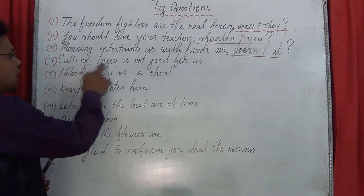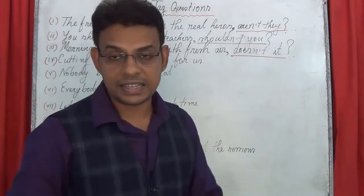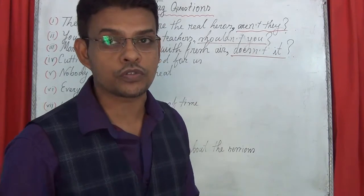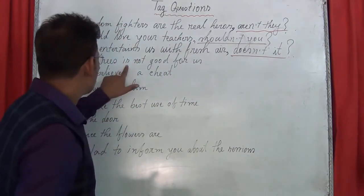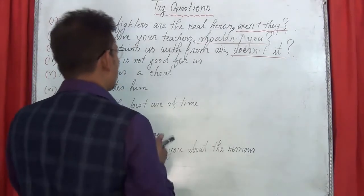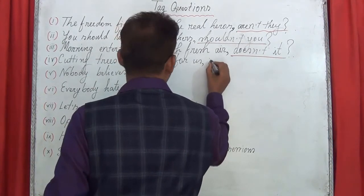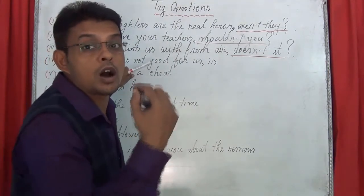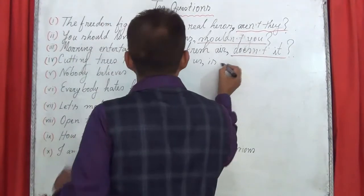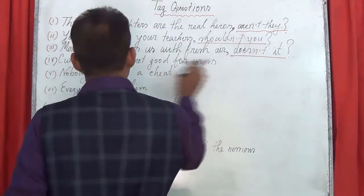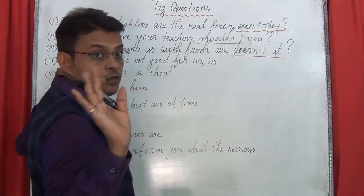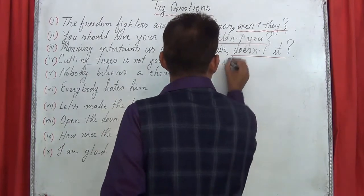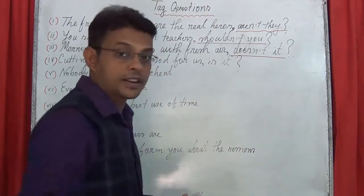Next statement: 'Cutting trees is not good for us.' What is the auxiliary? It is 'is.' So add a comma. 'Is not' is negative form, so you have to use the opposite — the affirmative form — 'is.' No need to use any negative form here. 'Cutting trees' is a noun phrase, and the pronoun for it is 'it.' So the tag question answer is: 'is it?'